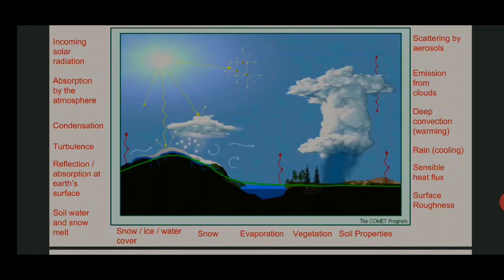Next is convection. The moist convection scheme represents deep convection, including congestus, shallow, and mid-level elevated moist-layer convection. The distinction between deep and shallow convection is made within the convection scheme. Most convection schemes also resolve the entrainment process and diurnal variation of convection. The effects of updrafts and downdrafts are also simulated by different methods, such as the Arakawa 2014 method.